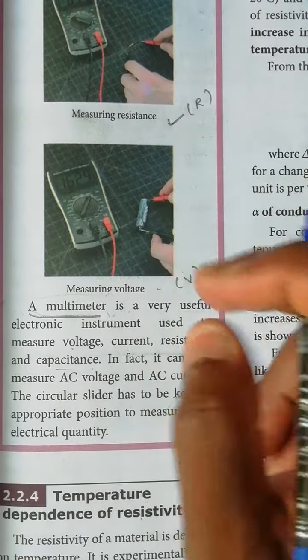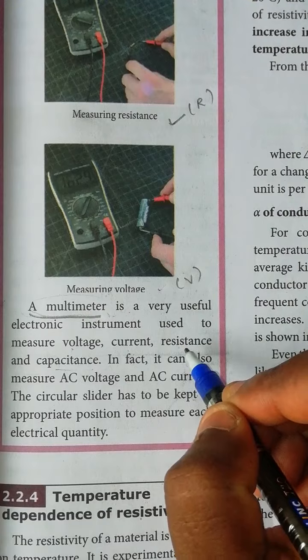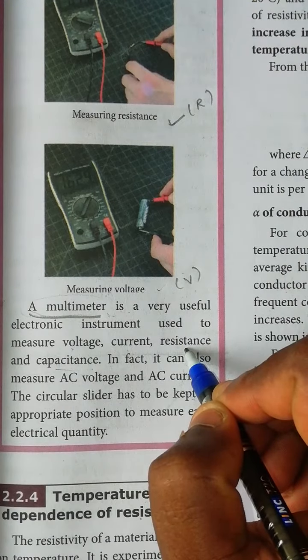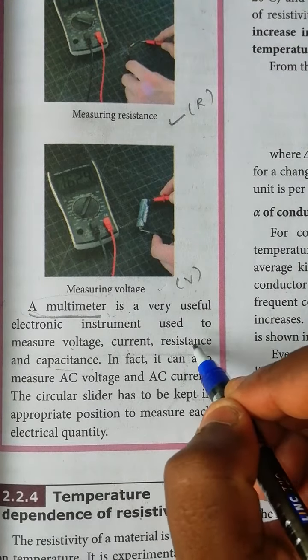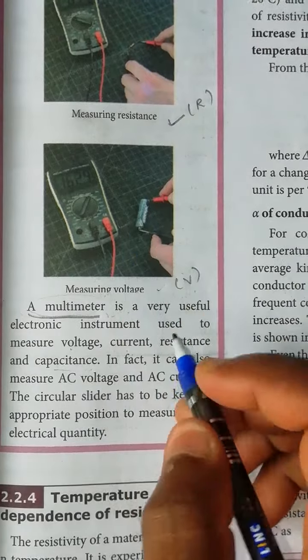For electrical work, to know the resistance value, the dial should be in the resistance position to measure. In fact,